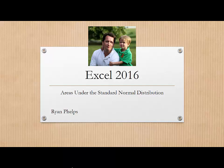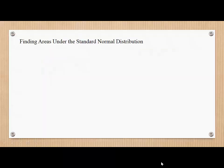I'm Ryan Phelps, and today we're going to look at finding areas under the standard normal distribution. To begin, we're going to start with the most simple case using Excel, which is a probability less than a z-score.